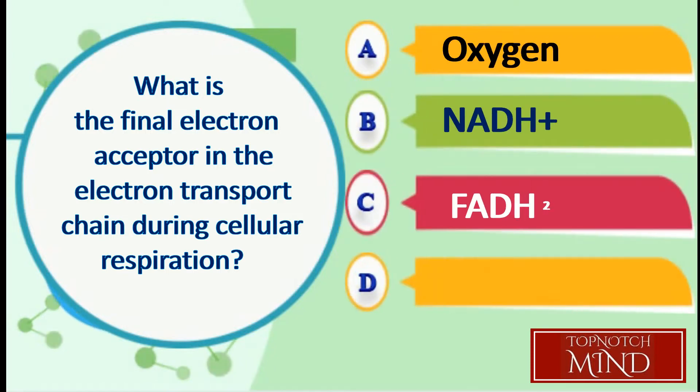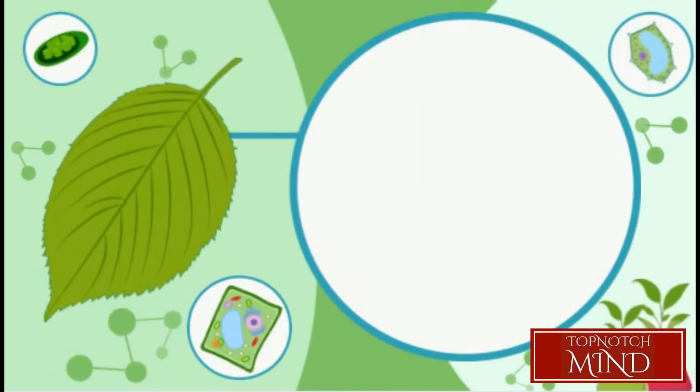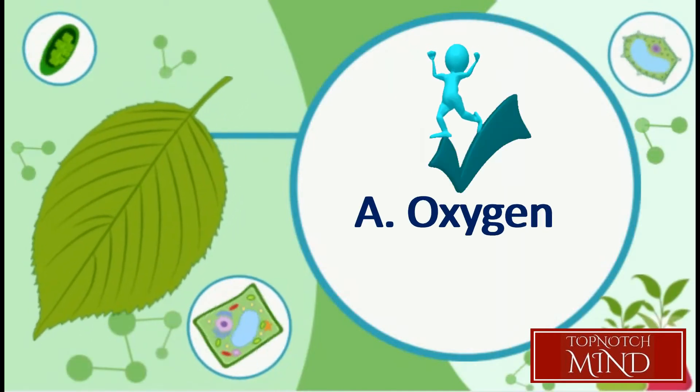What is the final electron acceptor in the electron transport chain during cellular respiration? A. Oxygen, B. NADH+, C. FADH2, D. Hydrogen.